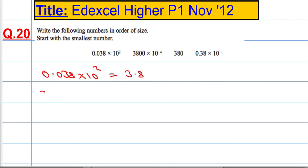The next one, 3800 × 10⁻⁴ is the same as dividing by 10,000. Dividing it by 10,000, it's going to go one, two, three, four places, so 0.38.